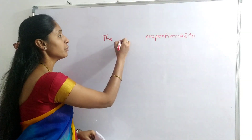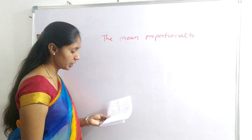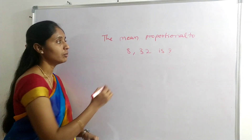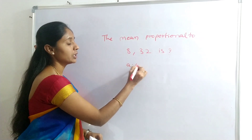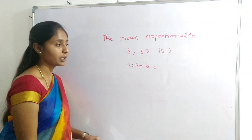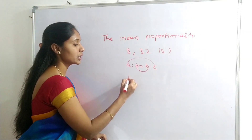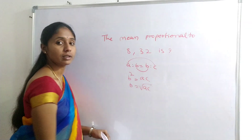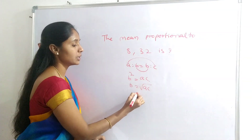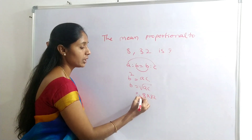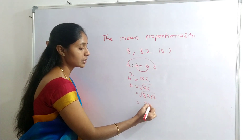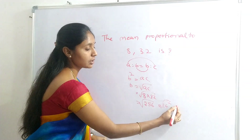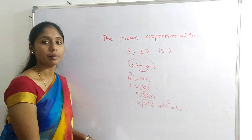Next question: The mean proportional to 8 and 32 is what? Mean proportional means A:B = B:C, so B² = A×C, giving B = √(AC). Here A = 8 and C = 32. So B = √(8×32) = √256 = 16. The mean proportional to 8 and 32 is 16.